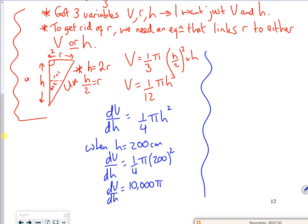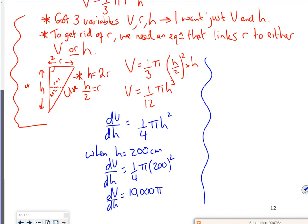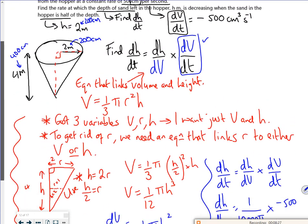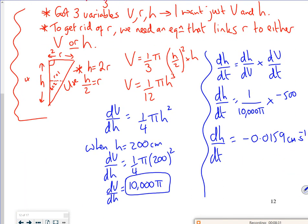Now if I go back to the original equation. So the original equation was for dh/dt. And we said that that was dh/dV times by dV/dt. So if I've got 10,000 π as dV/dh, we're all happy that by now it's 1 over dV/dh. So that's 1 over 10,000 π times by minus 500. If I've got this right, potentially, it is minus 0.0159. And if you look at the units, the height is in centimeters, and the time was in seconds, was it? Yeah, per second.